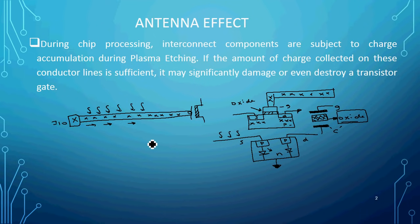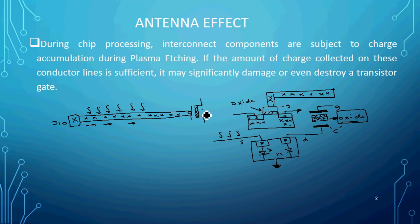Let me summarize the definition of antenna effect one more time. Whenever a lengthy metal is connected to a gate of the transistor, due to the manufacturing process — specifically plasma etching — charges will be accumulated in the metal plates. The accumulated charges directly go and hit the gate terminal. Too much charge reaches the gate through the metal, and as a result the gate oxide will be permanently damaged. This is the definition and explanation of antenna effect.